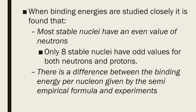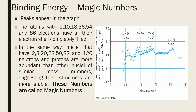When we examine binding energy closely, it is observed that the most stable nuclei have even values of neutrons — even numbers are always paired and hence more stable. There are only 18 nuclei having odd values of both protons and neutrons that are stable. There is also a marked difference between the binding energy per nucleon given by the semi-empirical formula and experimental values.